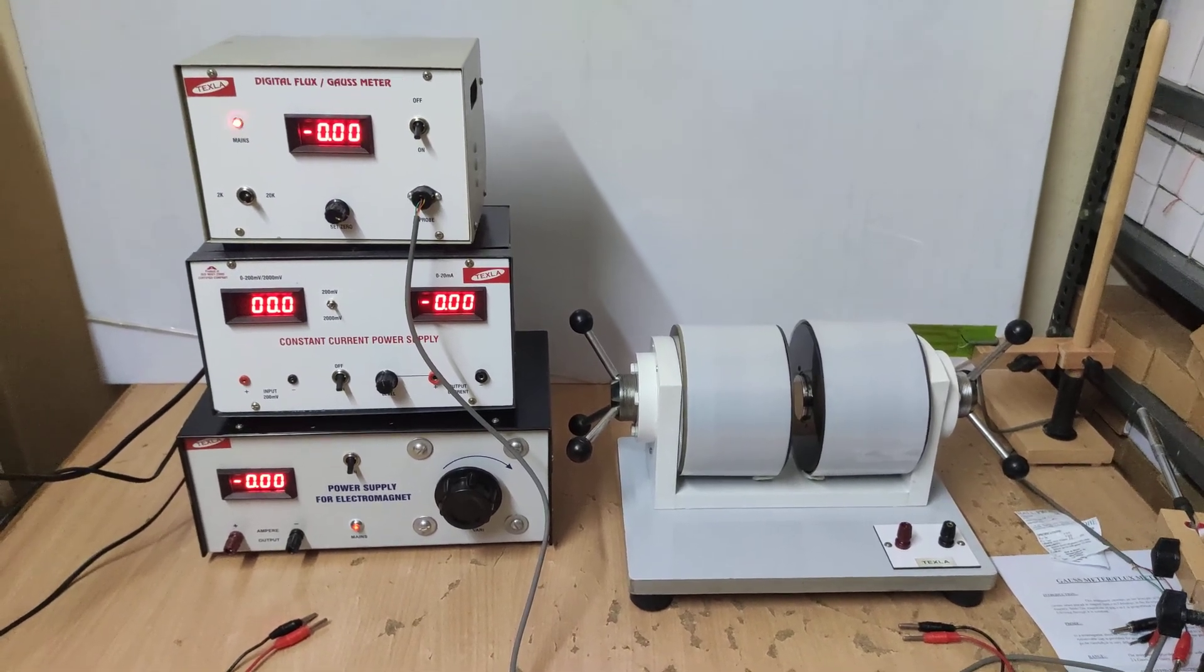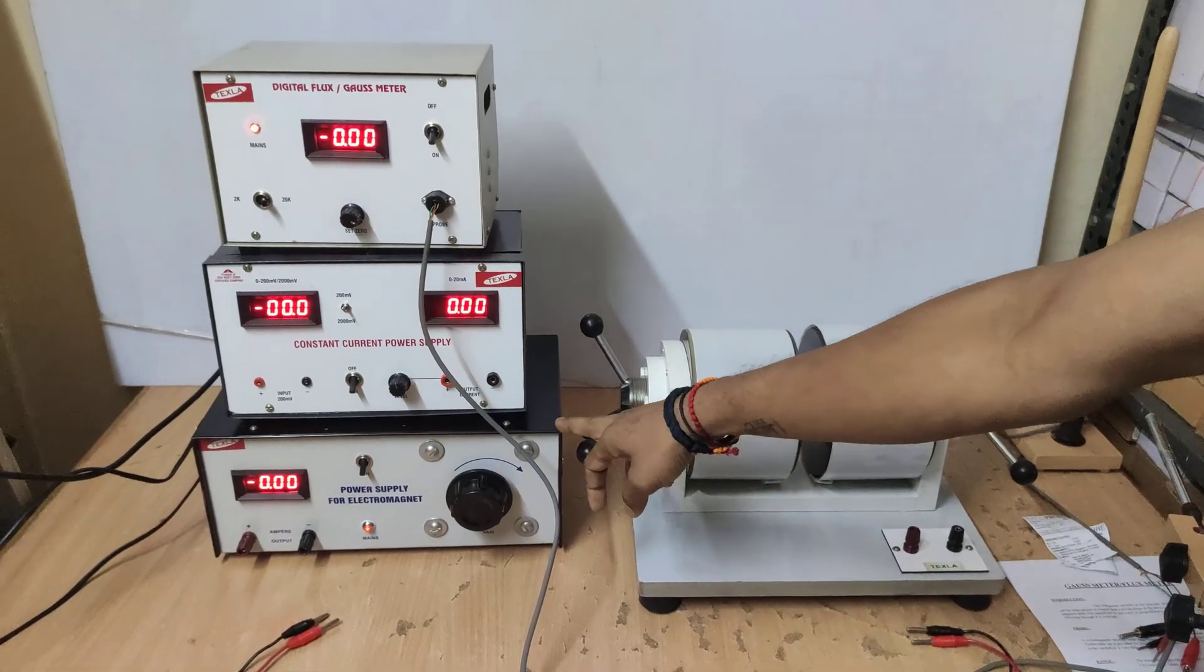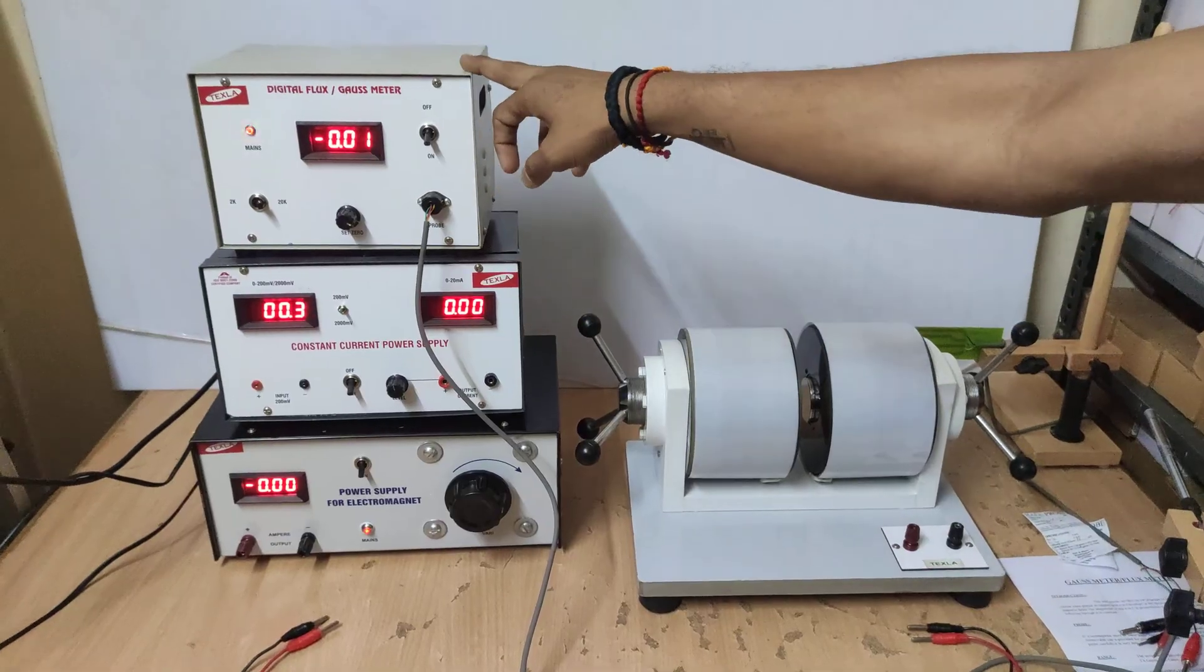Hall effect apparatus consists of electromagnetic coil, power supply for electromagnet, constant current power supply, and gauss meter.